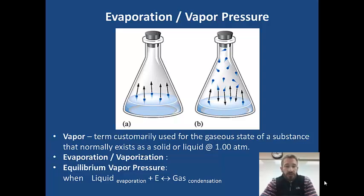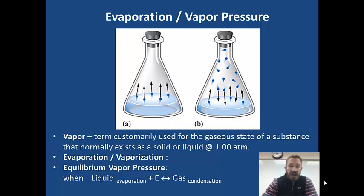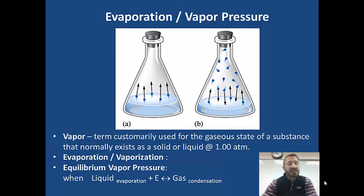We've got two flasks here. The first flask represents what happens when you put water into a flask and put a stopper on it, so you have a closed system. The up arrow represents evaporation — water begins to evaporate. After a period of time, the water that has evaporated to become vapor also starts to condense. Then the rate of vaporization equals the rate at which vapor goes into liquid, which is condensation.